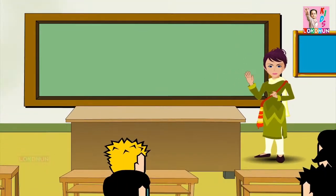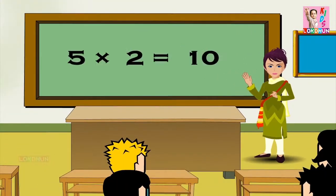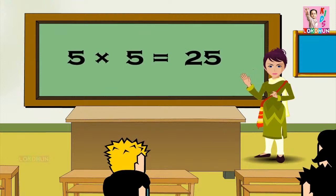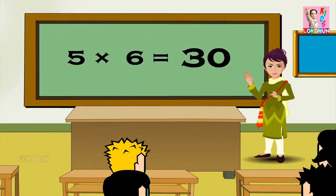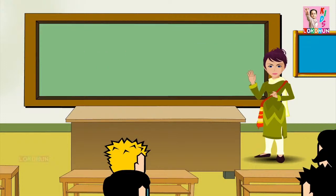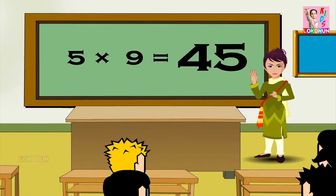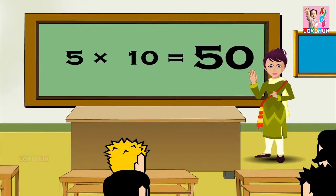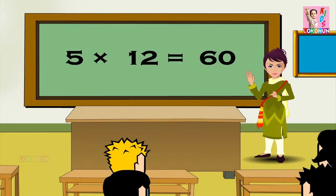Five ones are five, five twos are ten, five threes are fifteen, five fours are twenty, five fives are twenty-five, five sixes are thirty, five sevens are thirty-five, five eights are forty, five nines are forty-five, five tens are fifty, five elevens are fifty-five, and five twelves are sixty.